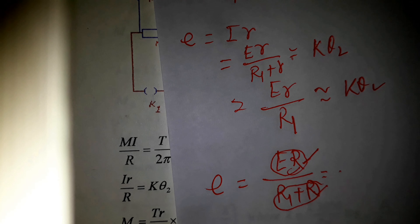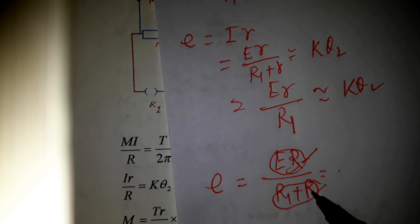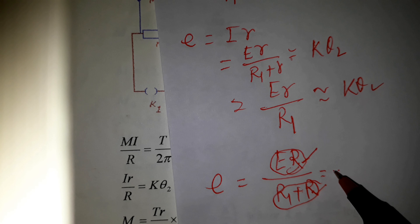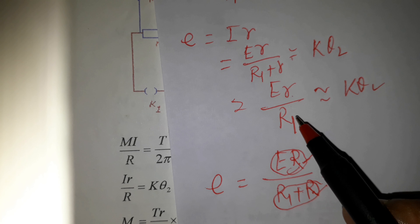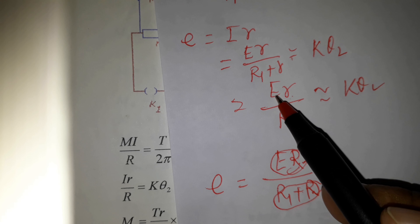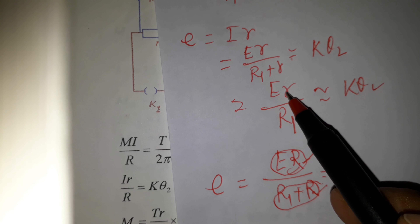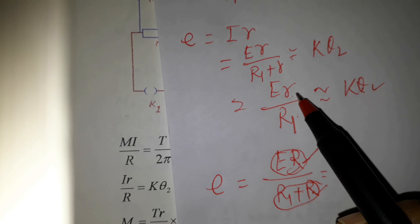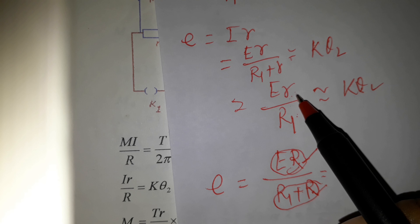The only way is to use a small value of resistance r so that r can be neglected in the denominator, giving E times r divided by R1. Since E and R1 are constant, increasing r increases theta_2 and decreasing r decreases theta_2. This is the only way to successfully adjust theta_2 to match theta_1.